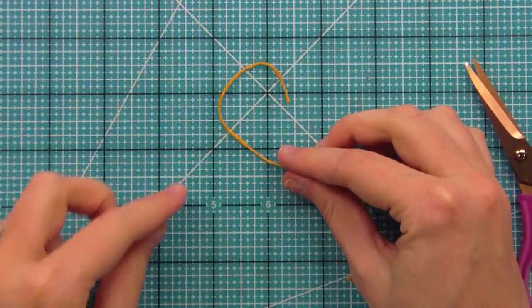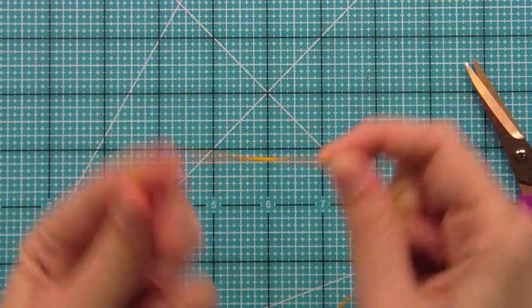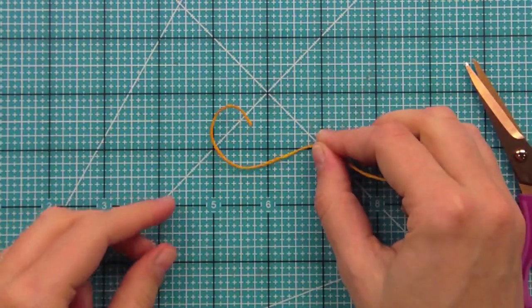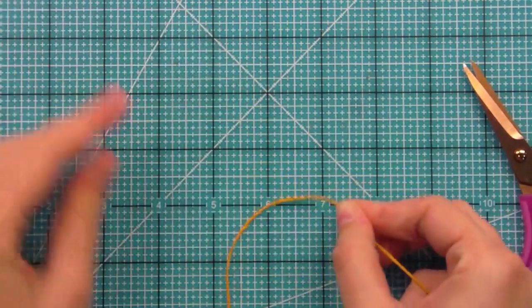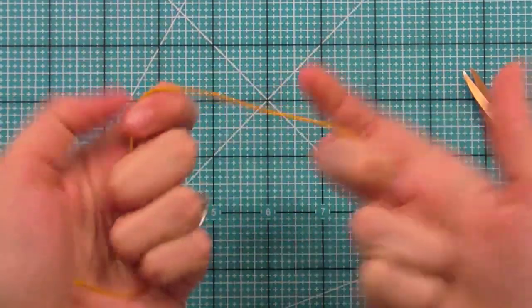So say you wanted a really great curl at the end of your bow, you can actually curl it around your finger just like that and it'll hold that shape. And then I can go ahead and just straighten it out again. I love that you can really play with it and all you're doing is using your fingers.